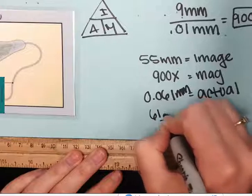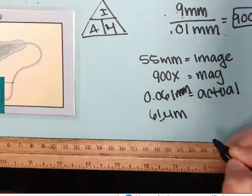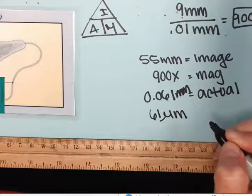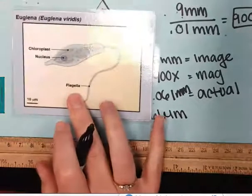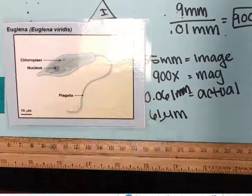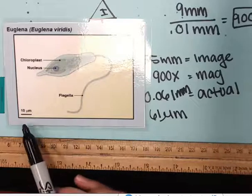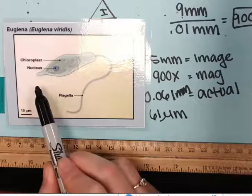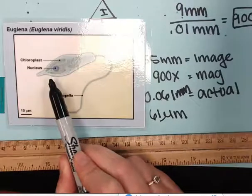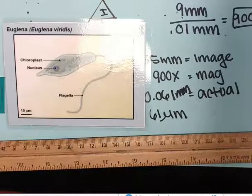If I want to look at that in micrometers, I would multiply that by a thousand, so that would be one, two, three: 61 micrometers. If I look at my picture and I think about it, if that's the scale bar and that's ten, does that look like it's about six of those? Yes. And so now I can actually kind of make that distinction.